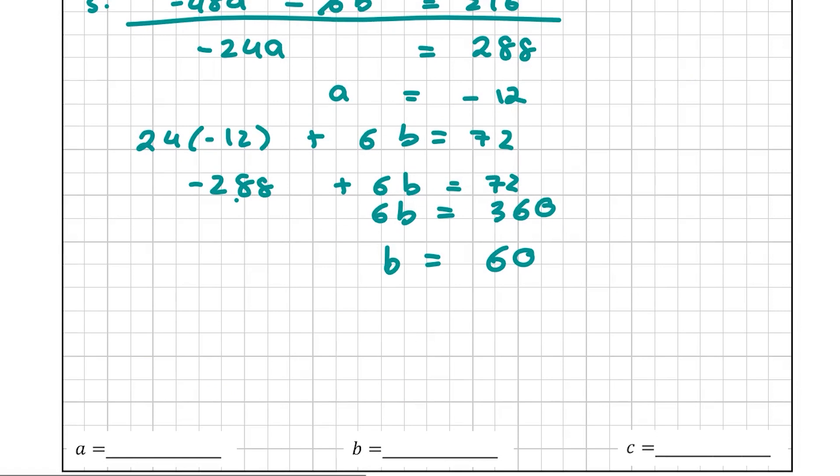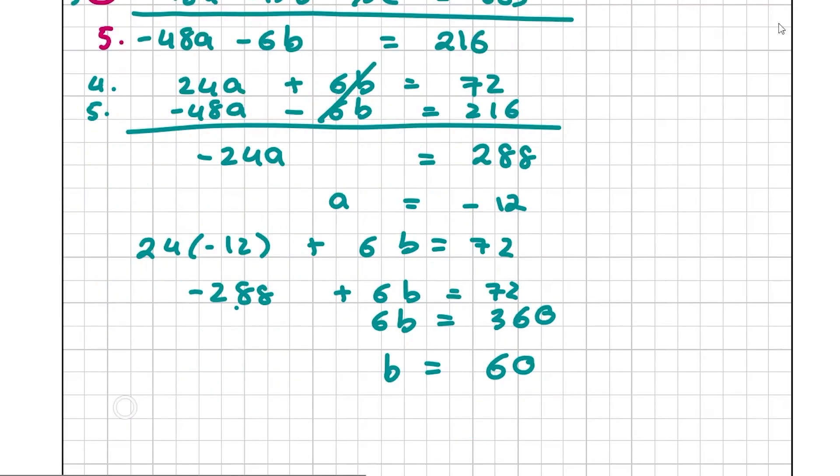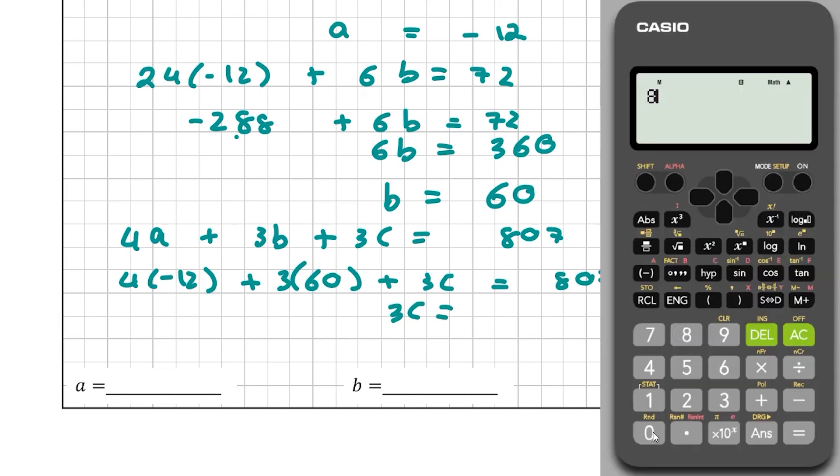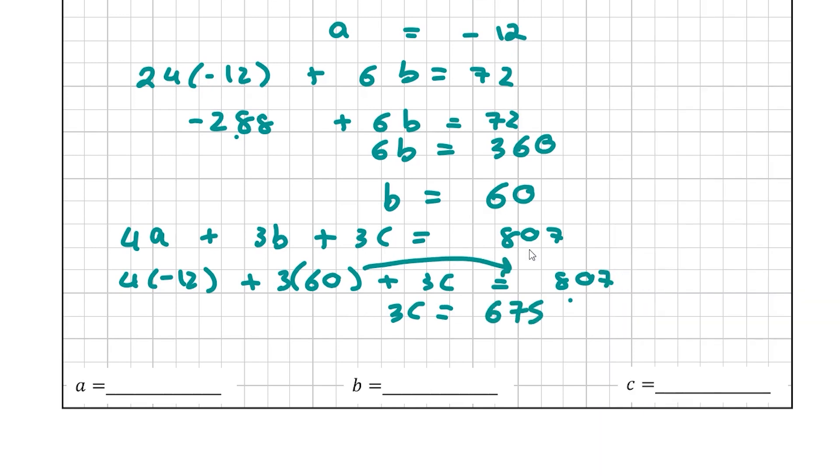And then C we're going to use one of the original equations. We're going to use 4A + 3B + 3C = 807. And I'm going to fill in A and B. So 4 × -12 + 3 × 60 + 3C = 807. So 3C = 807 - 4 × -12 - 3 × 60, and that gives us 675. Divide this by 3 to find the value of C and that is 225. So C = 225, B = 60 and A = -12. These are the answers to this question and you're going to get 15 marks for finding the correct answers.